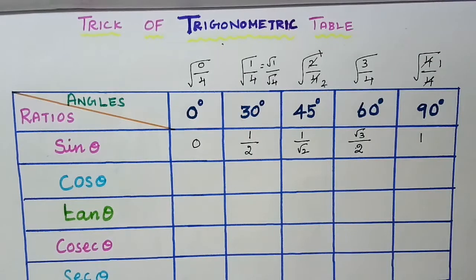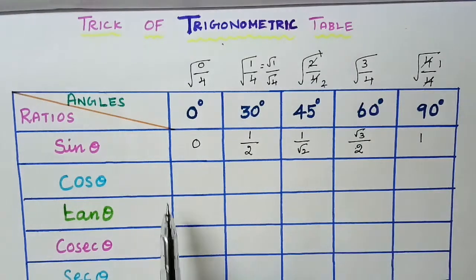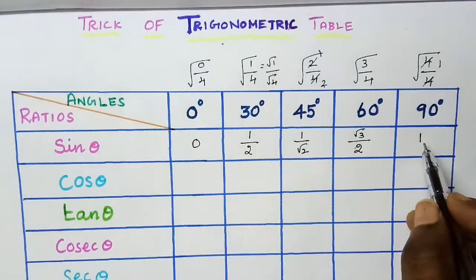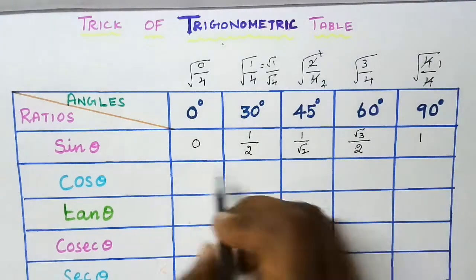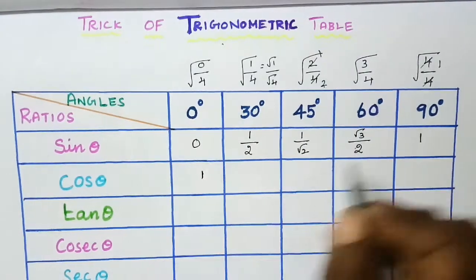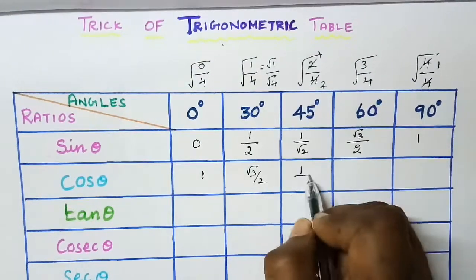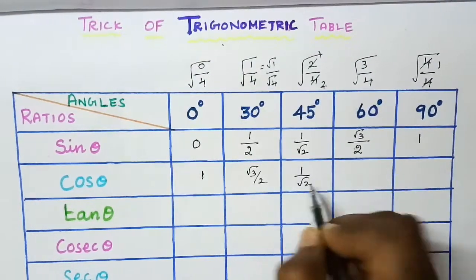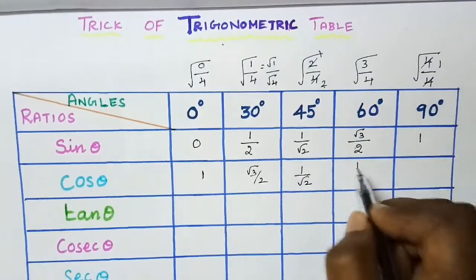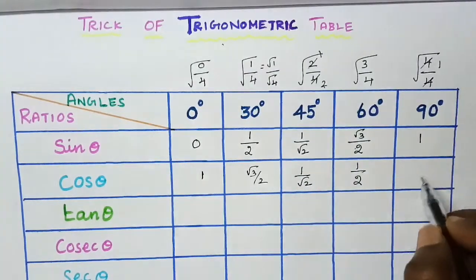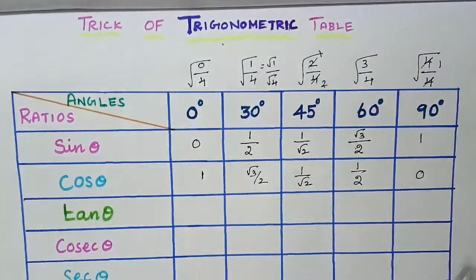Now we have to find out cos theta values. Just write the values of sin theta in reverse order: 1, root 3 by 2, 1 by root 2, 1 by 2, and 0.